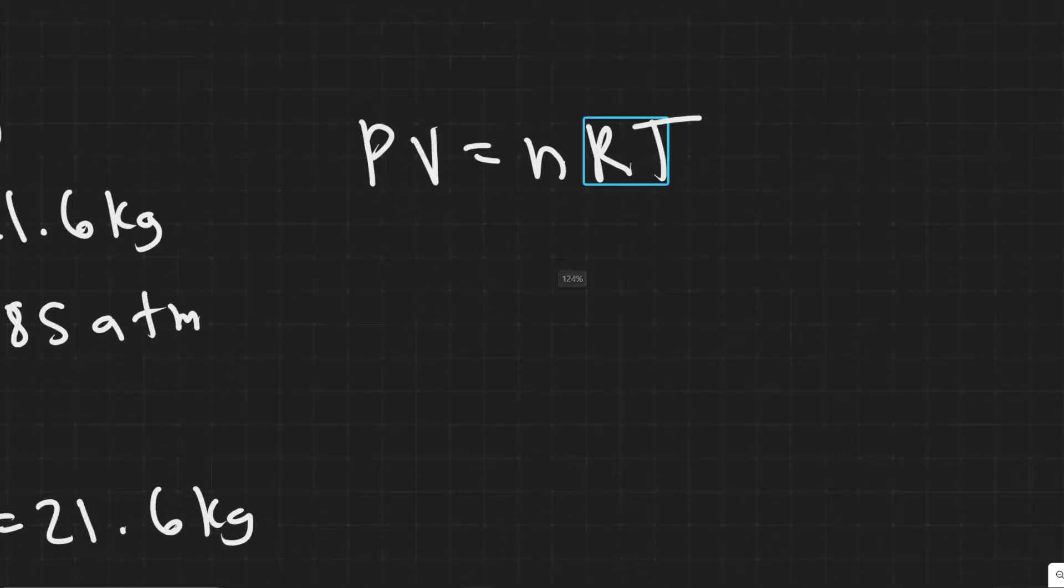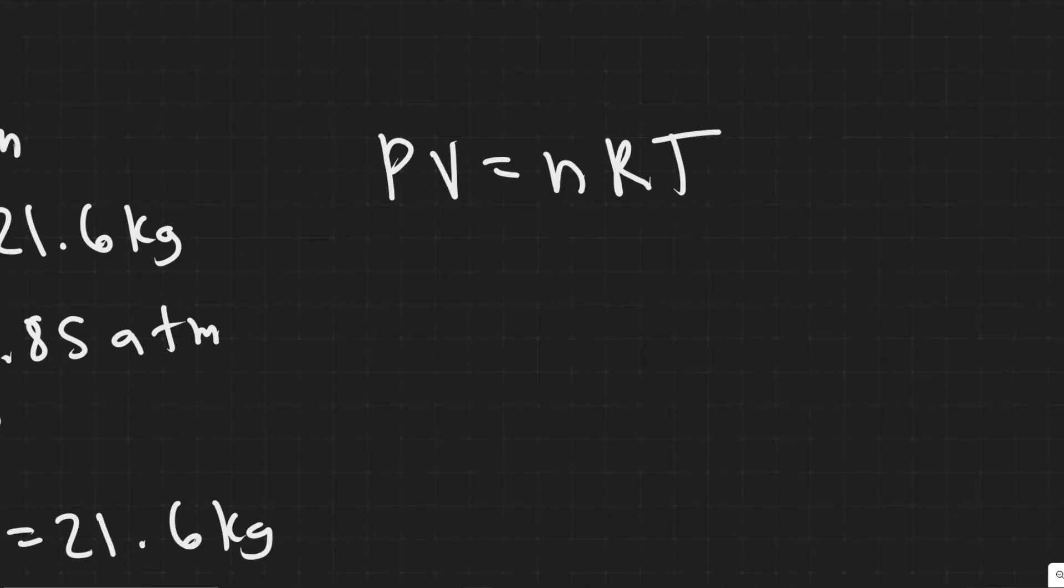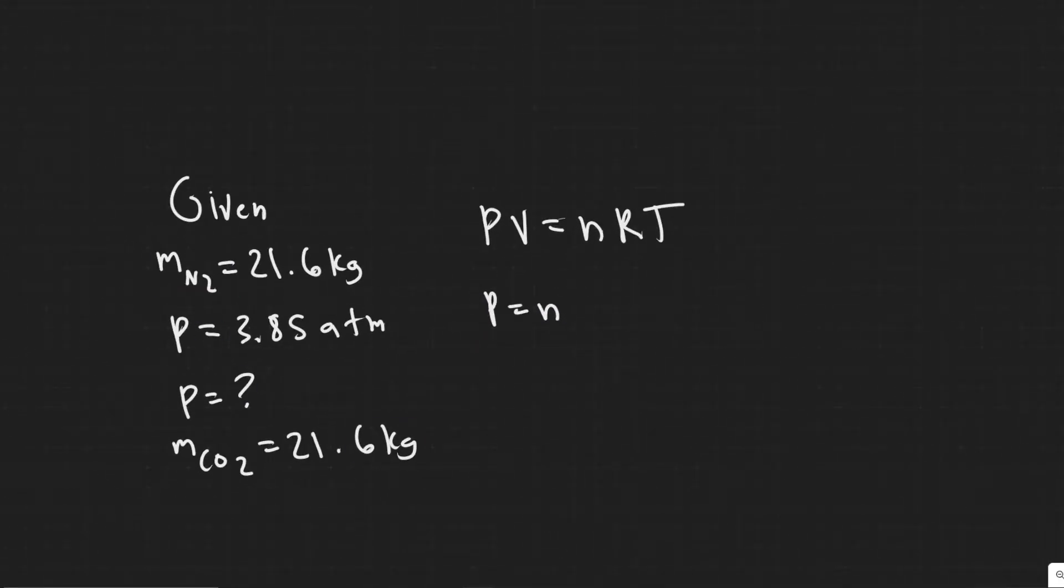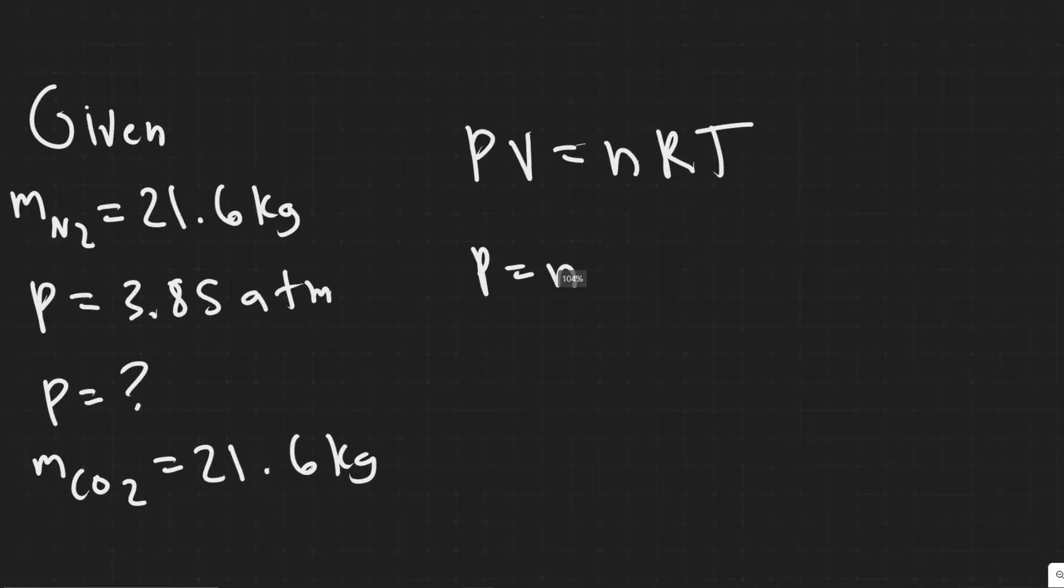And then the temperature, they tell us, is also going to be staying the same. So what we know is that P is going to be dependent on the number of moles, which is n. N is the number of moles here. And so what we're going to find is the ratio of basically N2 to CO2, and that's going to change our new pressure from our old one. So I think it's easier if you see how this is done.